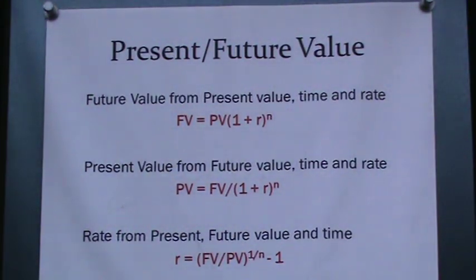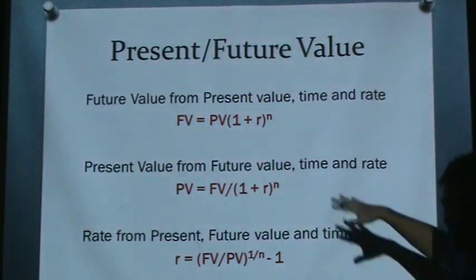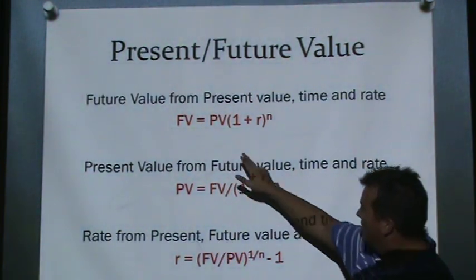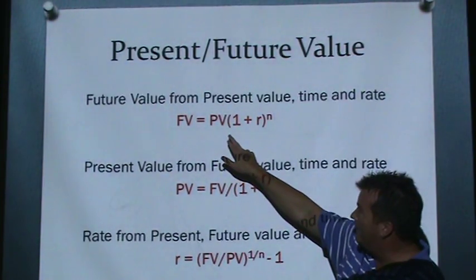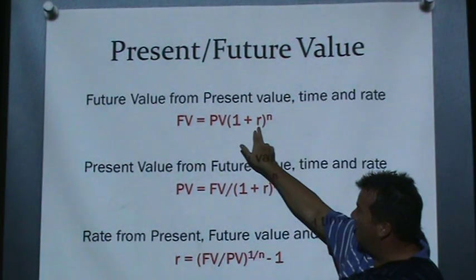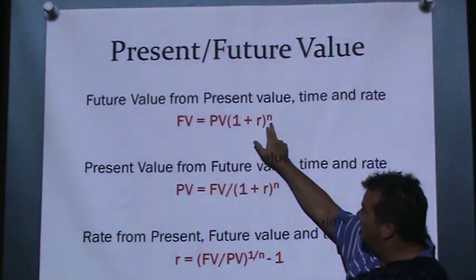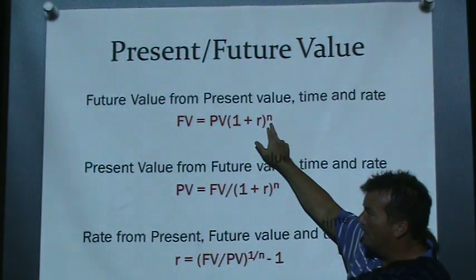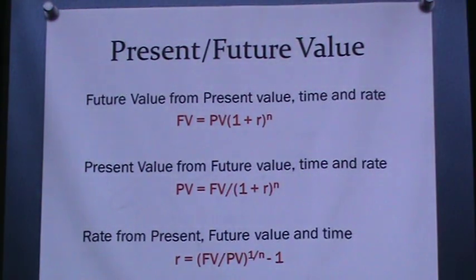A simple example: if the present value is $100, the annual interest rate is 5%, and you pay it back two years from now, it would end up being $110.25.